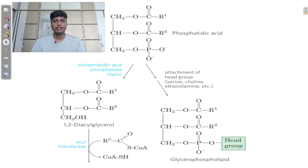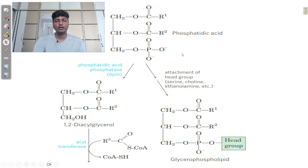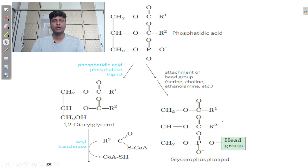Phosphatidic acid can be further converted into a triacylglycerol — a third fatty acid chain can be attached to the third carbon. Alternatively, if a particular head group such as an amino acid is attached to the third carbon, the net result will be a particular type of membrane phospholipid. Different types of head groups can be attached to the third carbon.